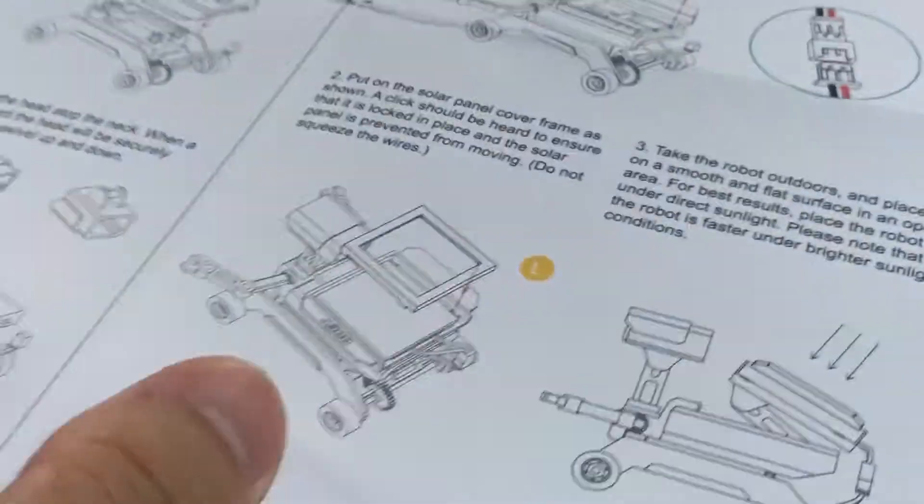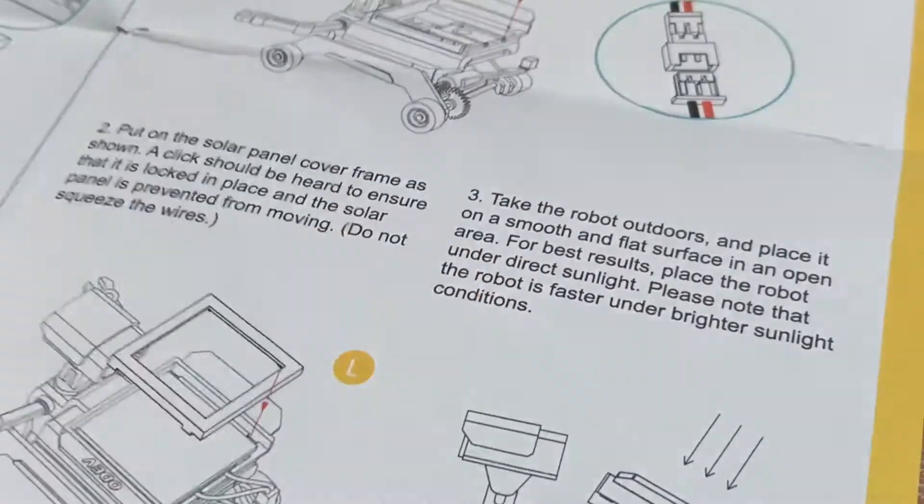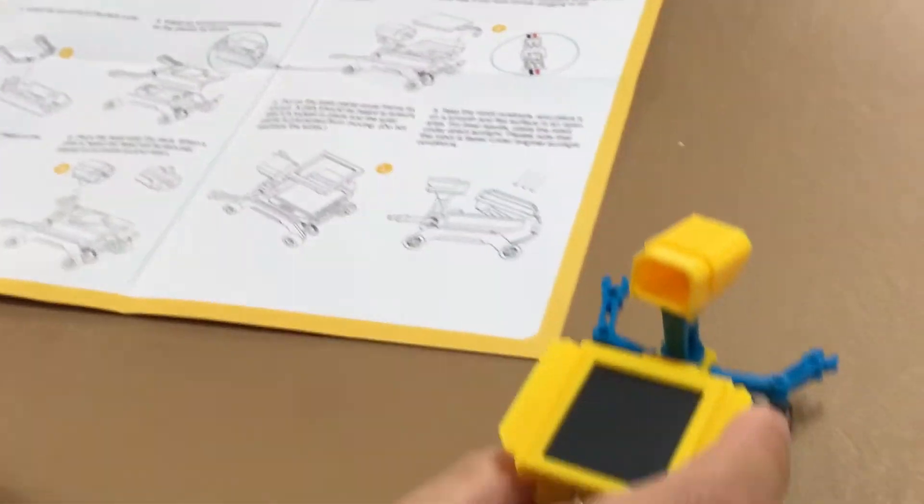Ah! Got it! These are very small. Okay. Let's bring it outside. I think it's done. So you have to take the robot outdoors and place it on smooth surface. Let's do it. Come on.